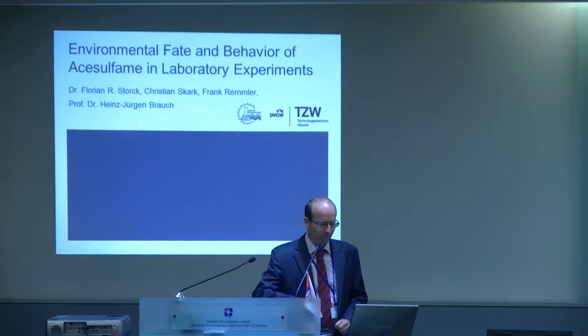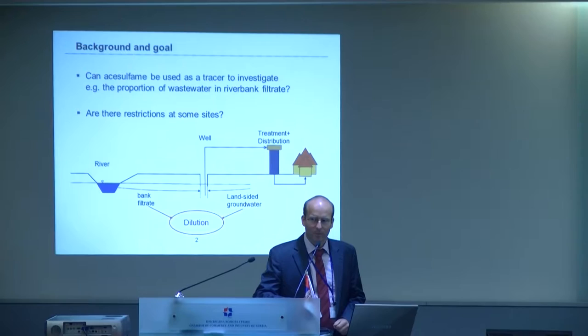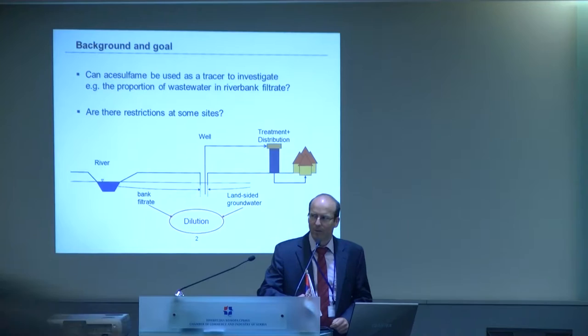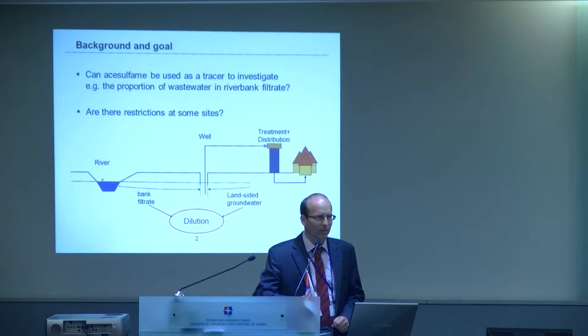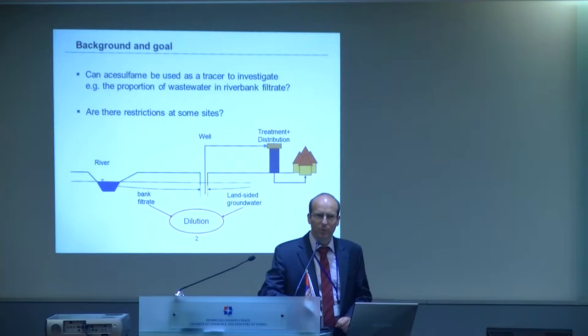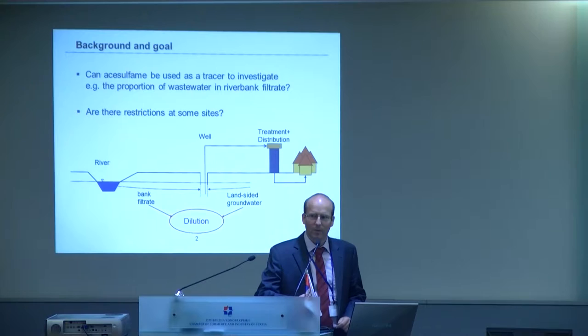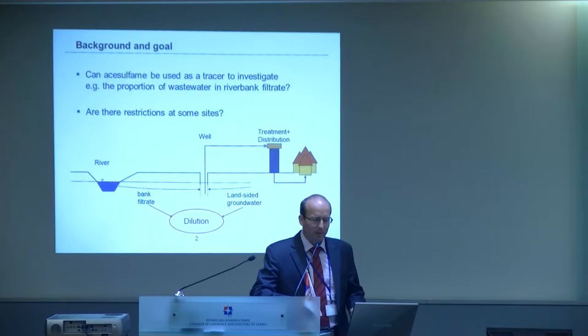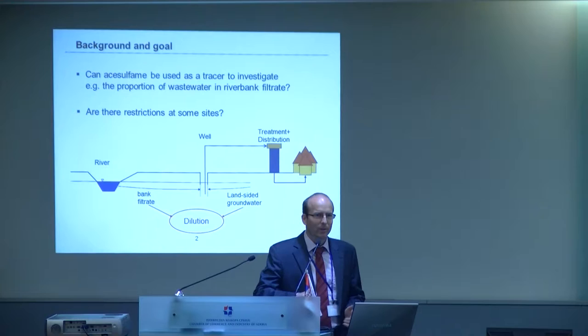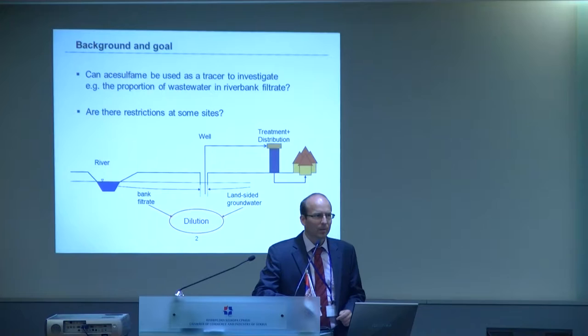So the background. Can we use acesulfame as a tracer just to investigate, for example, the proportion of bank filtrate that we abstract from a bank filtration well? And do we have some restrictions in the use of this potential tracer? Does it maybe depend on the site or on several environmental conditions? Here is the system: you have the river, you have a well near to the river bank, and you have the land-sided groundwater. There's usually a mixture of these both water sources, and we are interested in the proportion of the bank filtrate to see how much impact we have from the surface water, whether we have to expect some contamination, microbial problems, and so on.